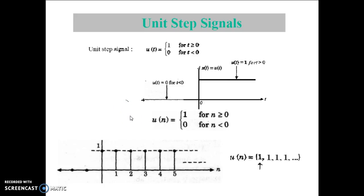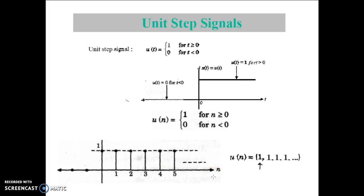Now let us see the Unit Step signal for discrete time. u(n) is equal to 1 for n greater than or equal to 0, and 0 for n less than 0. This is the graphical look of the Unit Step signal for the discrete time version.